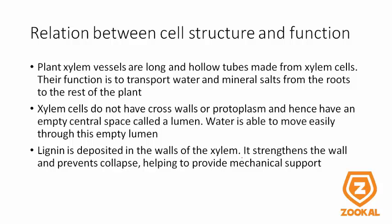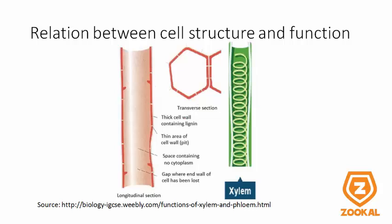The plant xylem vessels are long and hollow tubes made from xylem cells, and the function is to transport water and mineral salts. These cells do not have protoplasm, and hence there is less resistance, so water is able to move freely through an empty space called a lumen. Lignin is a protein deposited in the walls of the xylem to strengthen the wall and provide mechanical support. Here is an image showing the xylem. As you can see, this is a xylem cell in the transverse section, and we can see that there is no protoplasm, which allows water to flow freely through this empty lumen. The thick wall here contains lignin, which can be shown in this spiral-shaped protein. Lignin coils upwards around the cell wall of the cell and helps provide support.